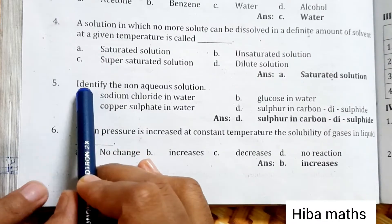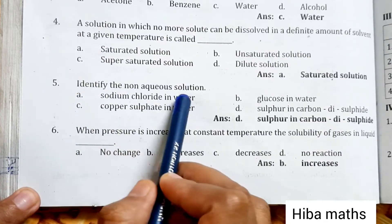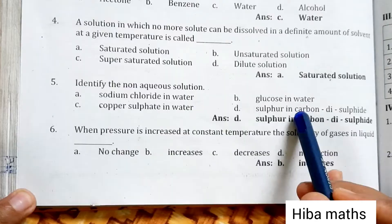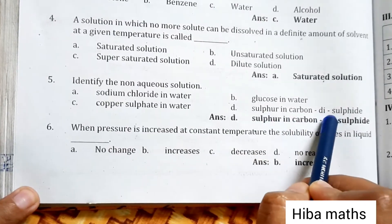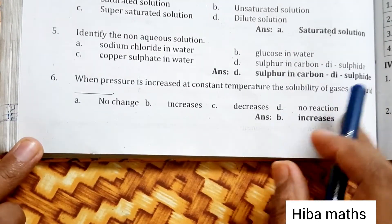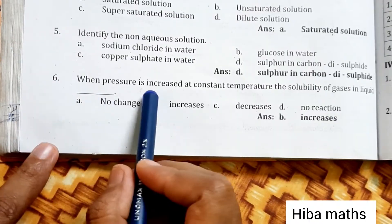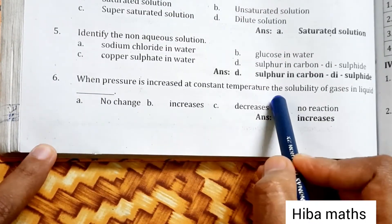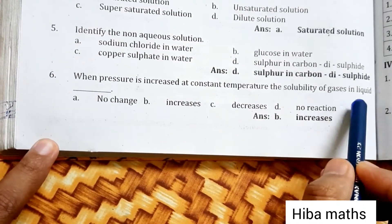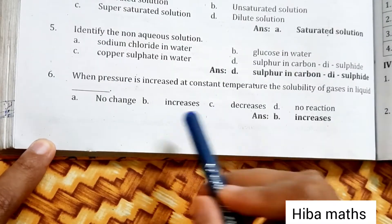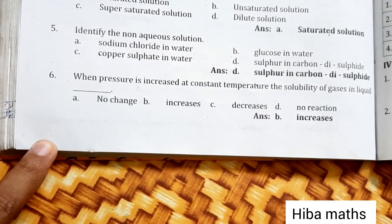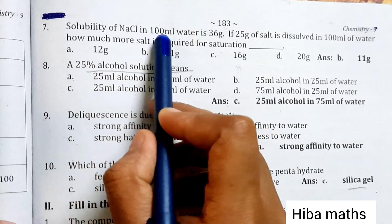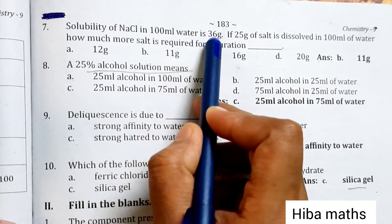5th question: identify the non-aqueous solution - sulfur in carbon disulfide. Last question: when pressure is increased at constant temperature, the solubility of gases in liquid increases. Solubility of NiCl in 100 ml water is 36 grams.